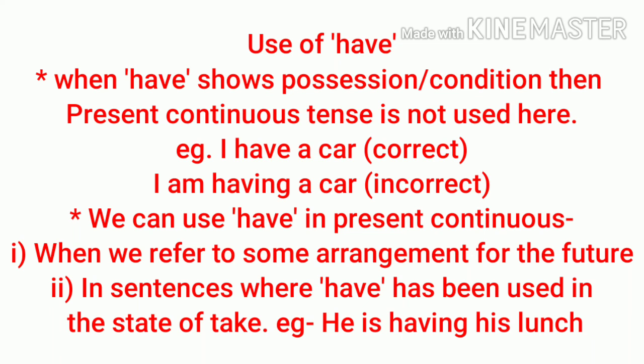The last topic is the use of 'have.' When 'have' shows possession or condition, the present continuous tense is not used. For example, 'I have a car' — when you own or possess something, we don't use the continuous form. However, we can use 'have' in the present continuous when referring to a future arrangement — for example, 'We are having a party tomorrow.' We can also use it when 'have' means 'take,' like 'He is having his lunch' or 'She is having her bath.'